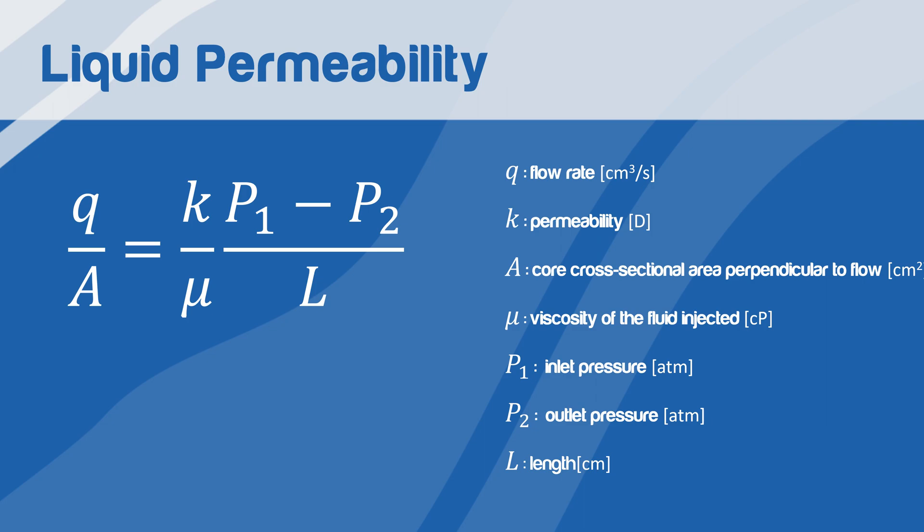This equation is in the linear form y = mx + b, where y is the dependent variable q/A, x is the independent variable (P₁ - P₂)/L, m is the slope k/μ, and b is the y-intercept. The y-intercept in this case is 0 since the curve goes through the origin.